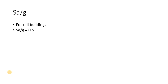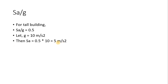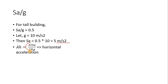For the tall building: Sa/g = 0.5 from the graph. Let g = 10, so Sa = 5. The horizontal seismic acceleration Ah is given by the formula: Ah = (Z × I × Sa) / (2 × R × g), as obtained from the IS code.